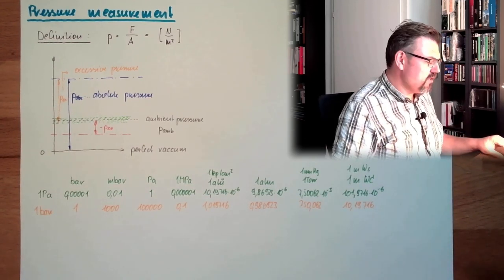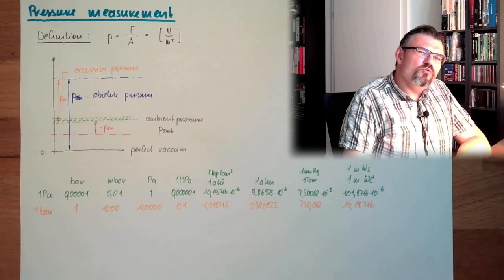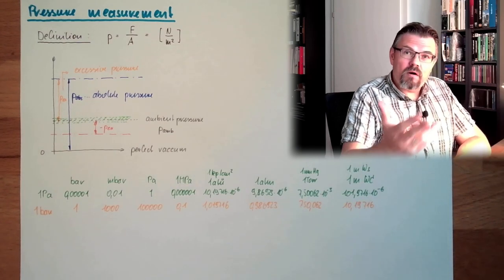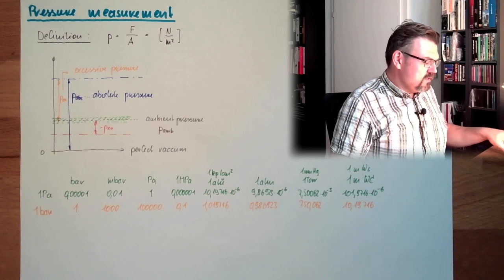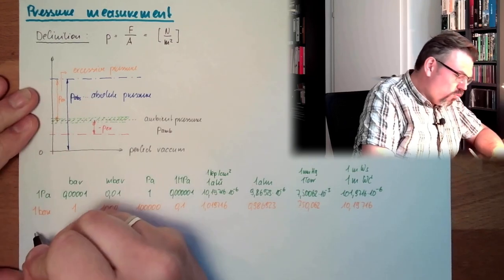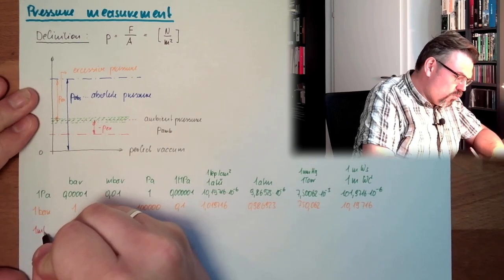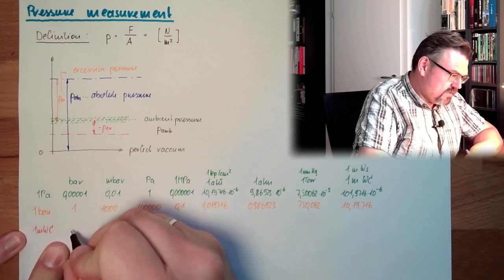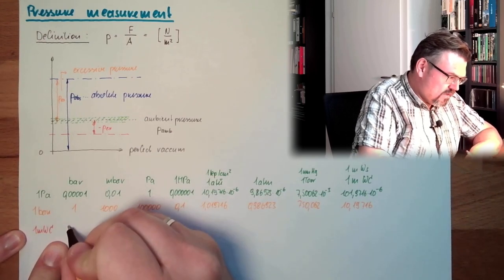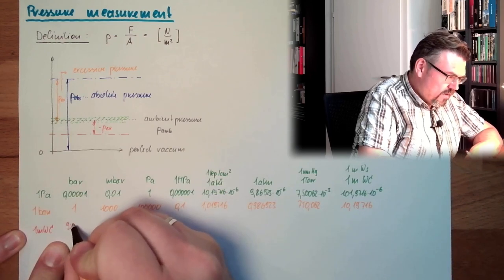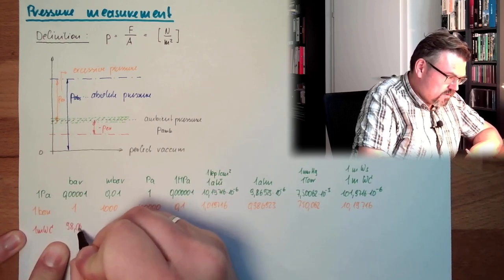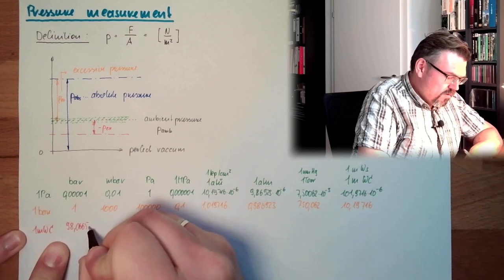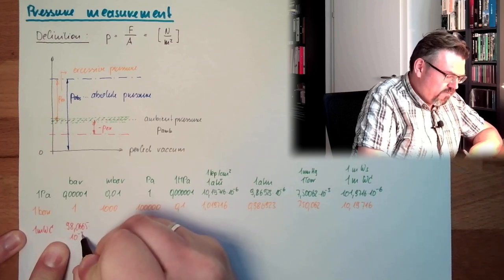And since this meter water column is very usual in hydropower plants, for instance, we have 1 meter water column.